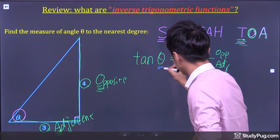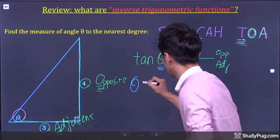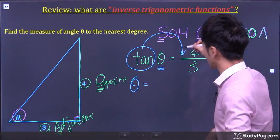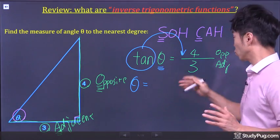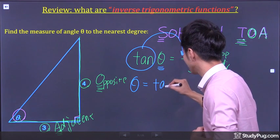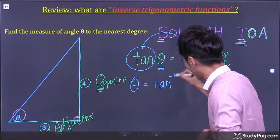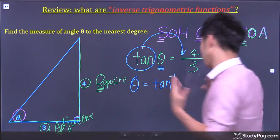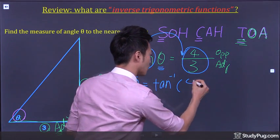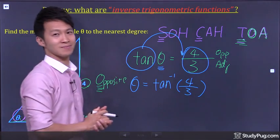Now, to solve for the angle theta, we will simply move the tangent function to the other side of the equation. But now, we don't write tangent anymore. Instead, we write tangent with a negative 1 up top, right? Of which value? Of this value. 4 over 3. Easy.